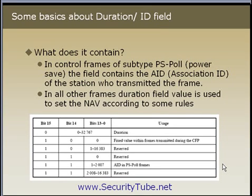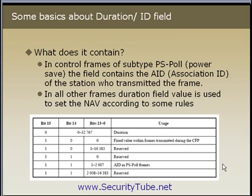Let's start with some basic idea about this Duration or ID field. What does this Duration or ID field contain? In control frames of subtype PS-Poll — that is power saver poll — the field contains the AID, or Association ID, of the station transmitting that frame. In all other packets other than PS-Poll, the field contents are used to set the NAV according to some rules.